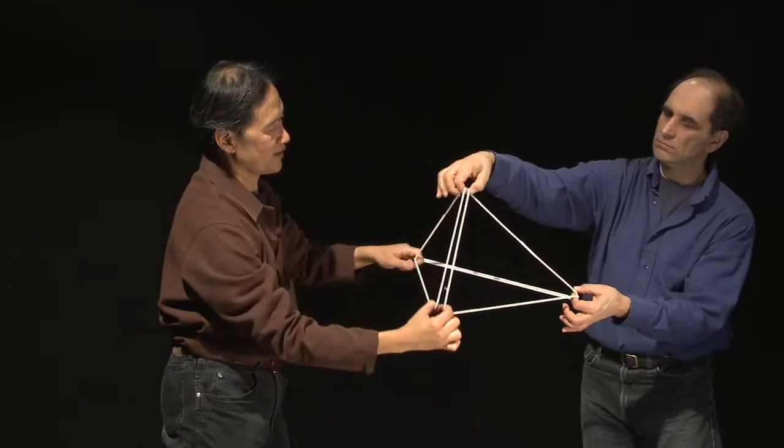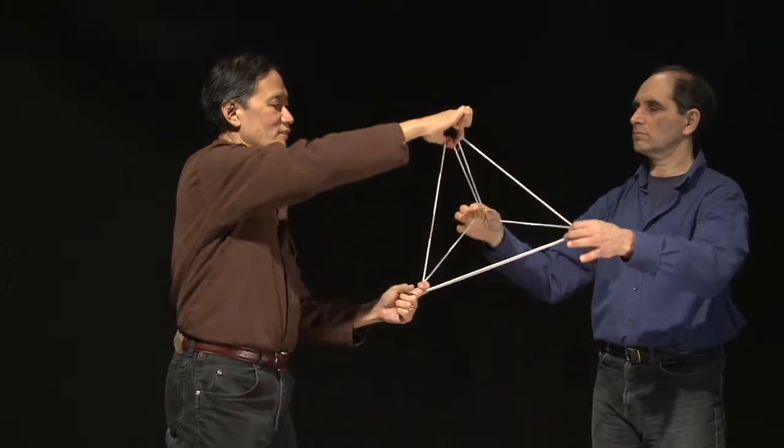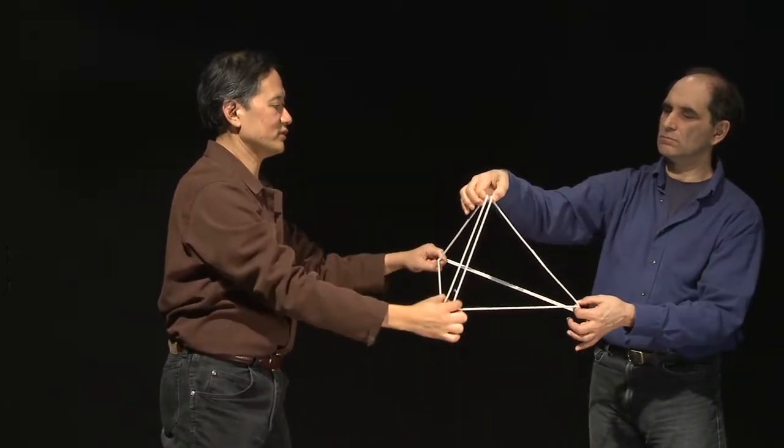And let's turn that and now we've got a tetrahedron, four triangles. You'll notice two of the strings are doubled.